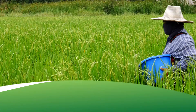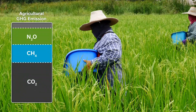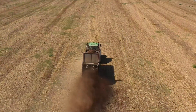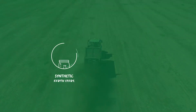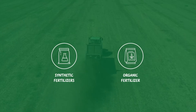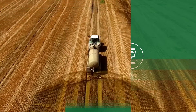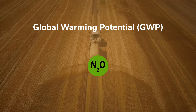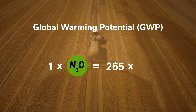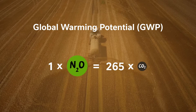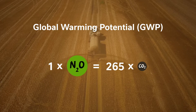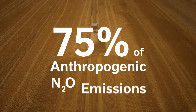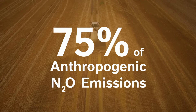Another quarter of agricultural emissions is nitrous oxide from nitrogen fertilization of agricultural soils with synthetic and organic fertilizers. Nitrous oxide is a highly potent greenhouse gas — 265 times stronger than carbon dioxide — and agriculture accounts for 75 percent of anthropogenic nitrous oxide emissions.